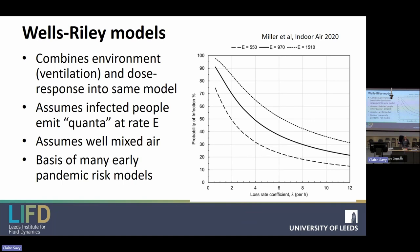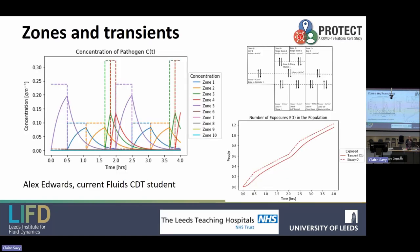The problem is that only thinking about the air in a well-mixed sense means if you only model the air you think everything's airborne, because you don't think about anything else. You can do more with this — Alex's work extended the model to multiple zones, thinking about people moving between different spaces, such as a healthcare worker moving between different zones of a hospital and how that might expose patients. That's one step towards addressing some of the limitations, but it still doesn't address what happens at close proximity.